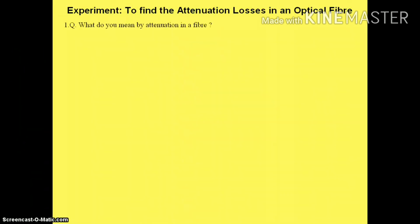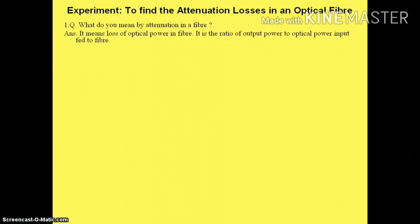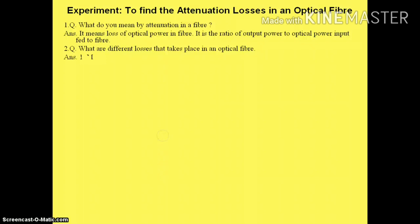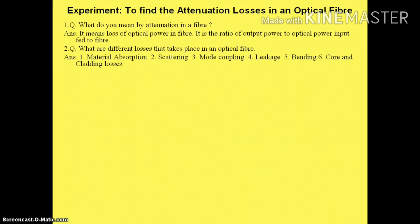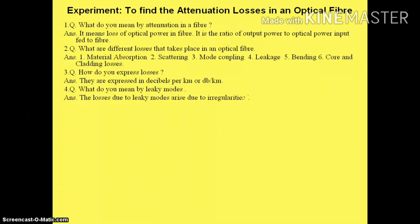The next experiment is to find the attenuation losses in an optical fiber, also called dispersion losses. First question: what do you mean by attenuation in an optical fiber? It means loss of optical power in the fiber — it is the ratio of output power to optical power input fed into the fiber. What are the different losses that take place in an optical fiber? They are: material absorption, scattering, mode coupling, leakage, bending, poor splicing, and cladding losses. How are losses expressed? They are expressed in decibels per kilometer.